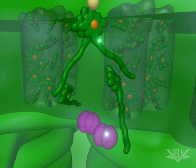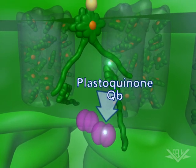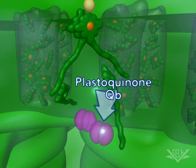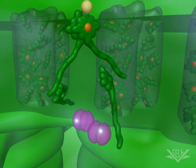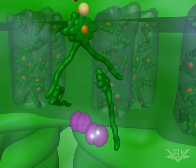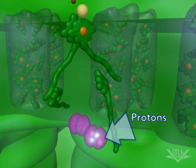Once excited, two electrons are transferred to plastoquinone QB, the first mobile carrier. In addition to the two electrons, QB also picks up two protons from the stroma.